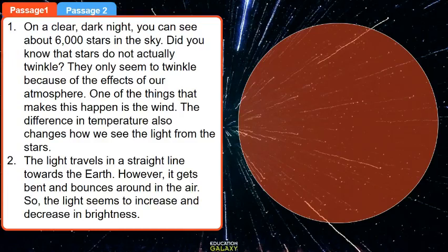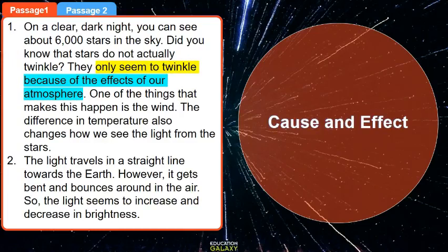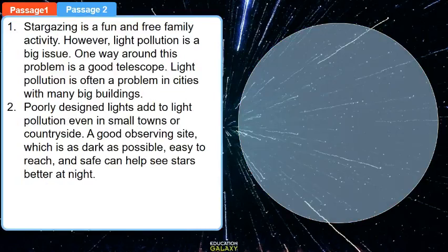Let's look at passage one. So this is an example of a cause. They only seem to twinkle. Because is the keyword for the cause. And the effects is the keyword for effect. Now we know this passage uses cause and effect, and it is about how stars appear to twinkle.